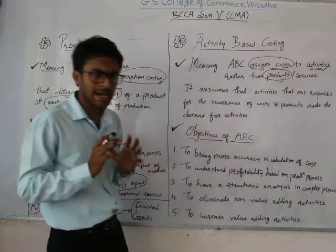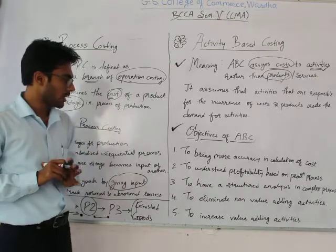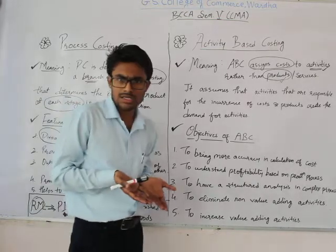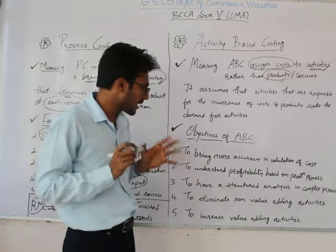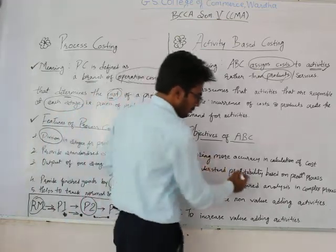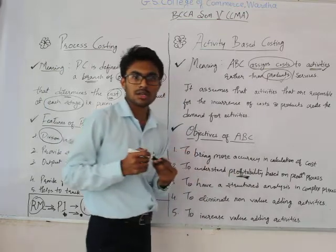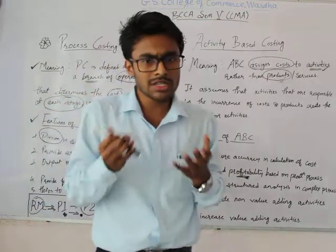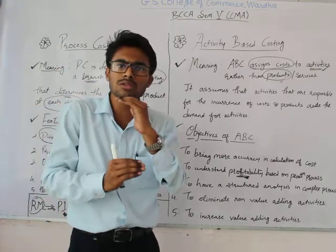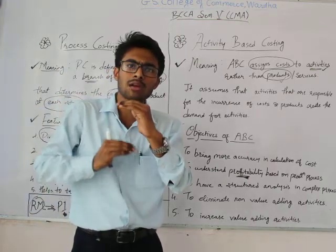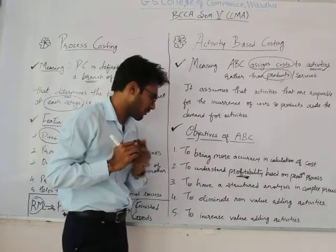The second objective is to help understand profitability based on process. Profitability can be increased by using ABC at its best levels — it can help to achieve profitability.